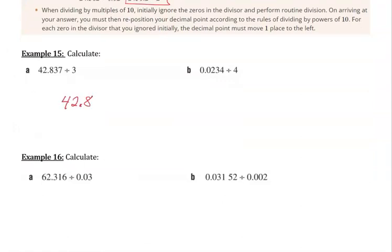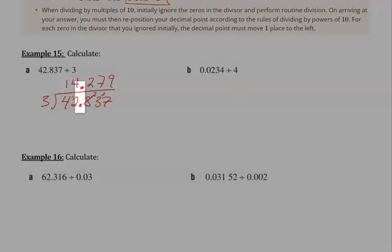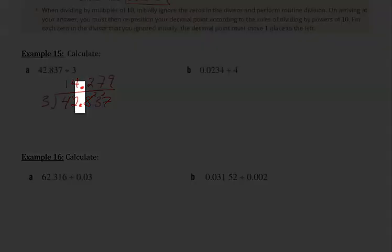Our dividend is 42.837 divided by our divisor, which is 3. And the first thing I'm going to do is put my decimal point in there because it goes in the same place in the quotient as it does in the dividend. Now let me work it out. Okay, and I use my calculator to check that's right. And there is my answer, just making sure I align those decimal points.